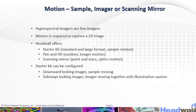Here we have the motion sampler imager or scanning mirror. Hyperspectral imagers are line imagers — motion is required to capture a 2D image. Headwall offers a starter kit in standard and large format for sample motion. We also have pan and tilt outdoor imager motions, a scanning mirror, point-and-stare object motions. The starter kit can be configured for a downward-looking imager sampling while moving, or a sideways-looking imager moving together with the illumination system.